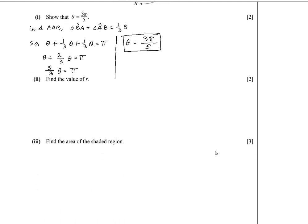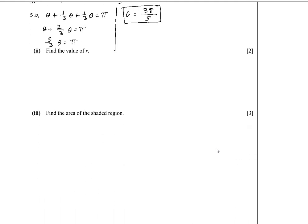Now let's move on to the next part of the question. Here we have to find the length of the radius r. The arc AB is 9π centimeters. The formula for arc length is rθ, so we can write rθ equals 9π. Substituting θ equals 3π over 5, we get r times 3π over 5 equals 9π. Cancelling π and dividing: 9 divided by 3 is 3, so r equals 3 times 5 equals 15. The length of the radius r is 15 cm.